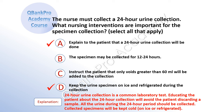The correct answer is A: explain to the patient that a 24-hour urine collection will be done. And D: keep the urine specimen on ice and refrigerate it during the collection. Explanation: 24-hour urine collection is a common laboratory test. Educating the patient about the 24-hour collection will avoid the patient discarding a sample. All the urine during the 24-hour period should be collected. Collected specimens will be kept cold, on ice, or refrigerated.